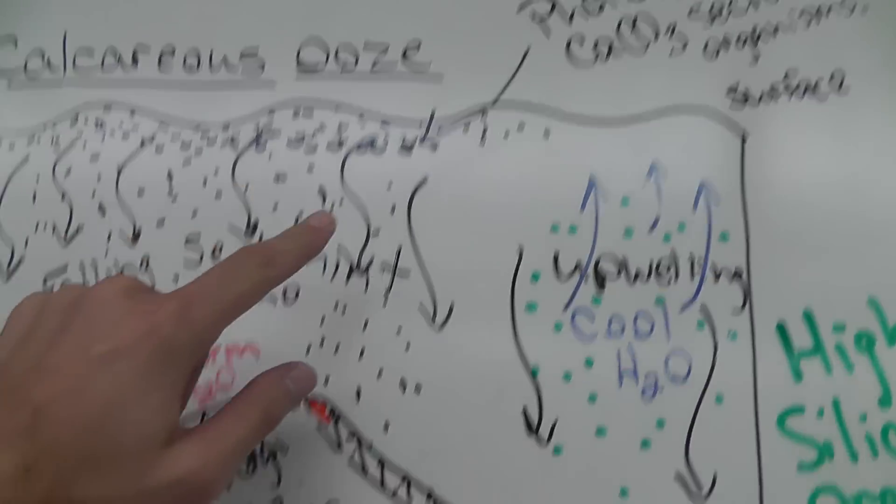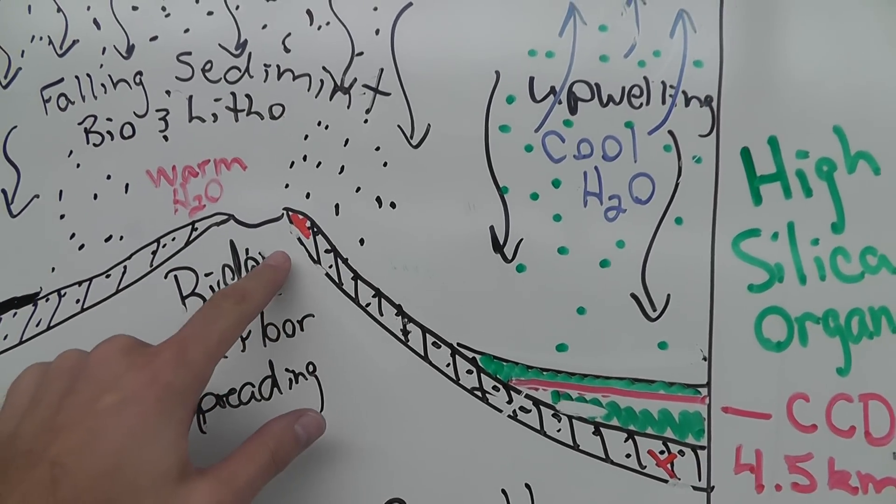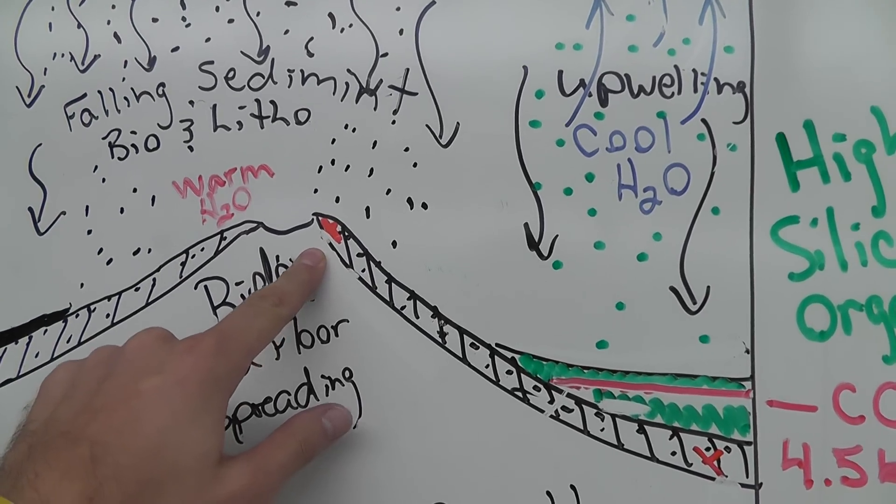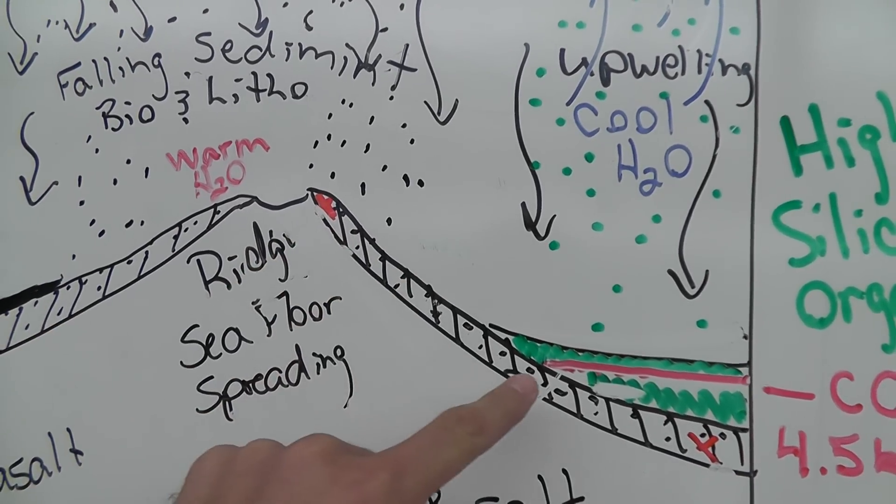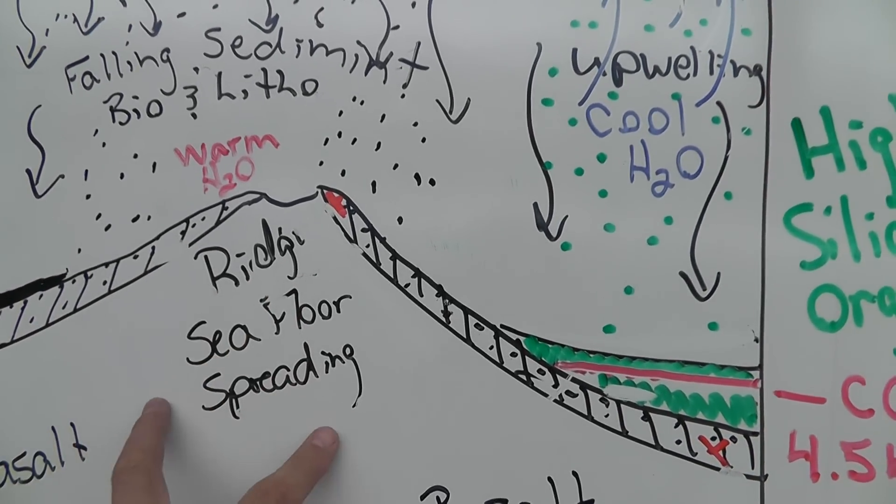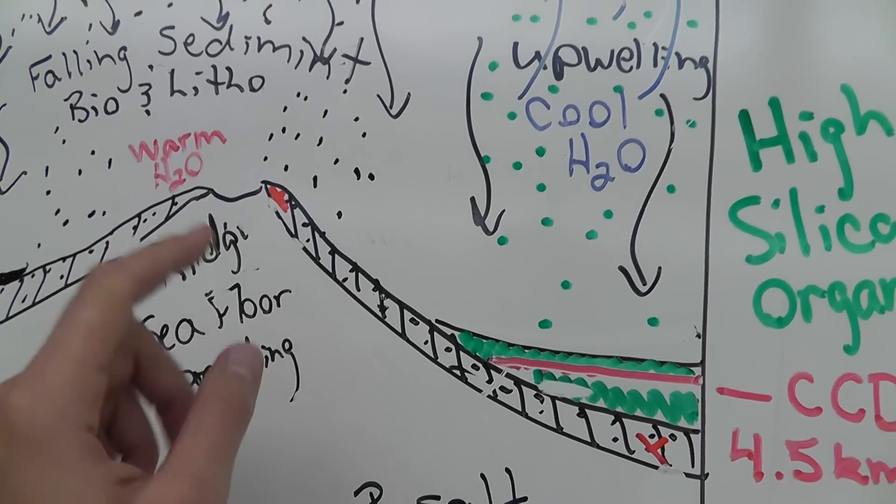So these organisms fall and they build up and then over time if we look at this little red X right here. Over time these silica organisms get encased and these ones get encased and well the sea floor is spreading because it's a ridge so new magma is being made and the sea floor is spreading apart.